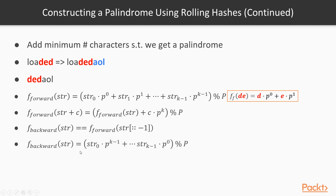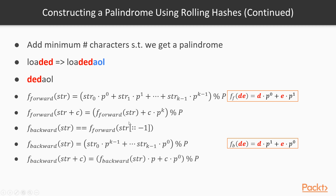f_backward of a string is equal to something very similar to f_forward, except that the exponents are in reverse order. For example, f_backward of 'de' is d times p to the power of 1 plus e times p to the power of 0. You can see it's basically the same as computing f_forward of 'de' in reverse. We have achieved our goal of being able to compute these efficiently. There is a recursive definition for f_backward: when we add a new character, we multiply f_backward of the string by lowercase p and simply add c. And f_forward equals f_backward implies a palindromic prefix.